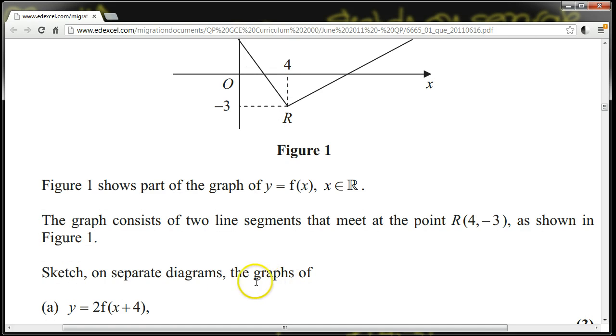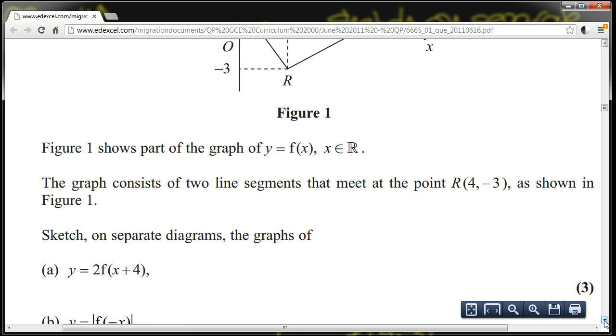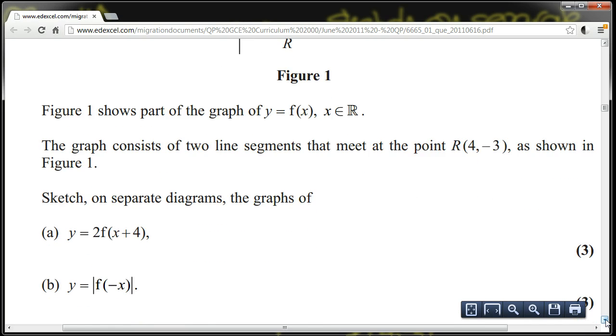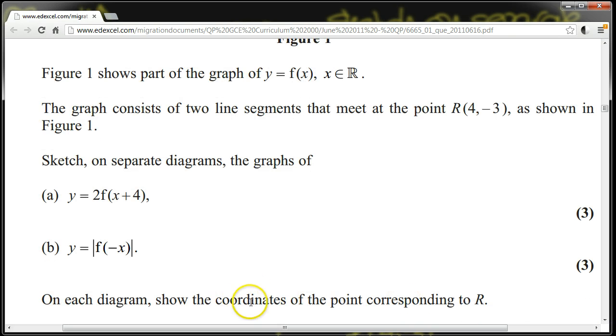Sketch on separate diagrams the graph of y equals 2(f(x+4)) and y equals the modulus of f(-x). Each diagram shows the coordinates of the point corresponding to R.